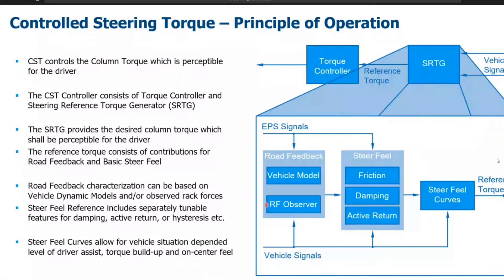The road feedback characterization can be based on vehicle dynamic models or observed rack forces. If a rack force observer with unlimited performance is used, you would nearly perfectly get the rack force value as it is physically existing, and you could feed this into your torque controller to provide the driver steer feel as it is physically at the rack.